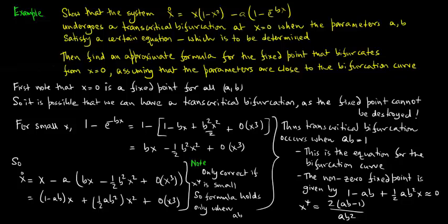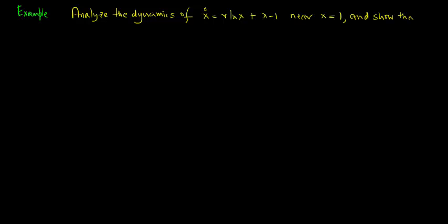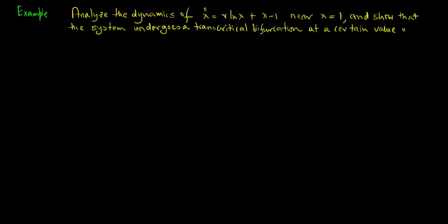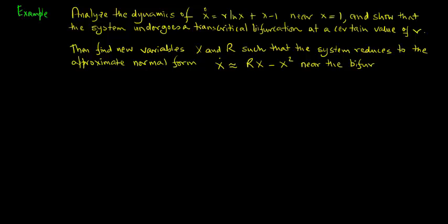Let us consider another example: analyze the dynamics of x̊ = r·ln(x) + x - 1 near x = 1, and show that the system undergoes a transcritical bifurcation at a certain value of r. Then find new variables X and R such that the system reduces to the approximate normal form X̊ = RX - X² near the bifurcation.